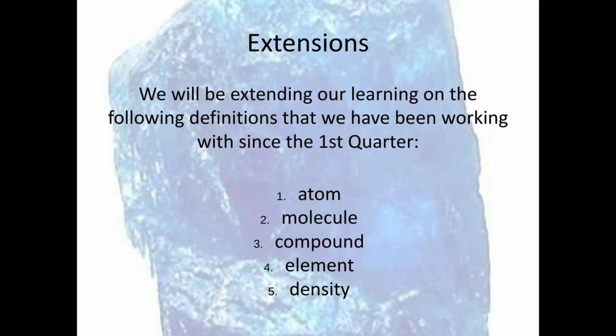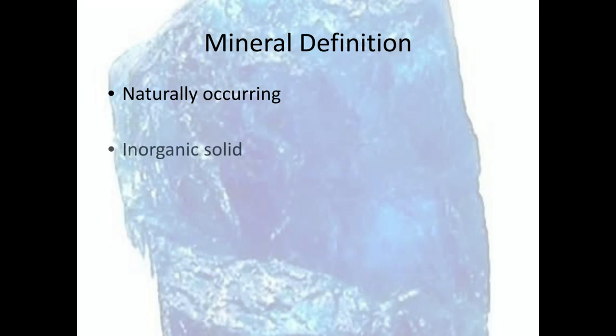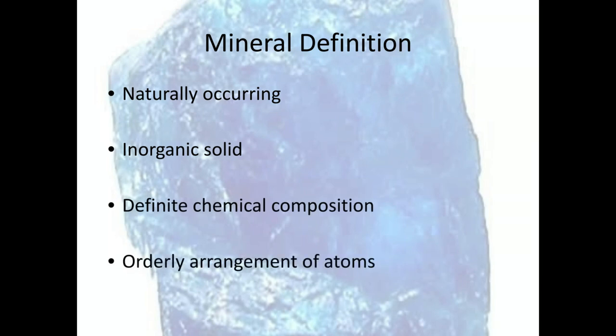Just as a reminder, yesterday we covered some basic definitions we've been working with — atoms, molecules, compounds, elements, and density. Today we're going to start building off of that in our look at minerals. The word mineral has a four-part definition. If something fails any one of these four things, it is not considered a mineral — it must meet all four criteria: naturally occurring, inorganic solid, definite chemical composition, and an orderly arrangement of atoms.